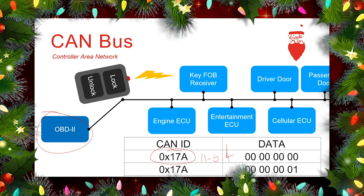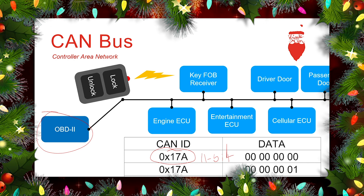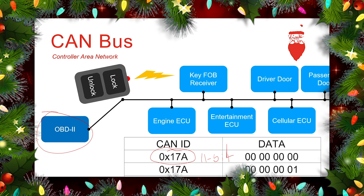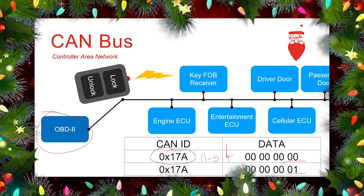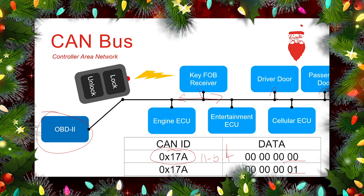Following each CAN ID you get a data chunk. The size of the data chunk varies based on the type of message and even more based on the dialect of CAN that the manufacturer has chosen for that particular vehicle — it's totally different from manufacturer to manufacturer and can vary even model to model. In our example, locking and unlocking is CAN ID 17A, where 00 is a lock and 01 is an unlock. That message comes out across the bus and most devices ignore it until it reaches the driver or passenger door, which then opens the lock.